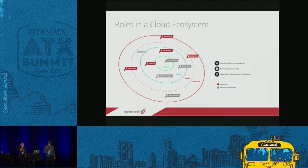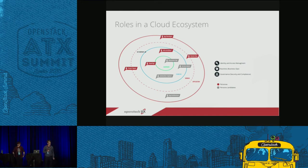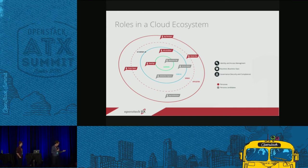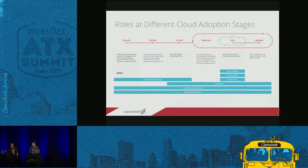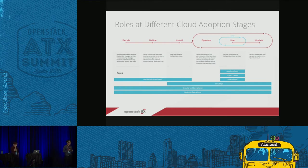In the middle we have data center ops, then moving outward: automation engineers, service admin — the owners of different projects in OpenStack — cloud ops, and infrastructure architect. Moving further outward you have domain ops, developers, project owner, and then end developers. The red roles are where we focused on creating personas; the gray ones are acknowledged as important but haven't been fully developed yet.